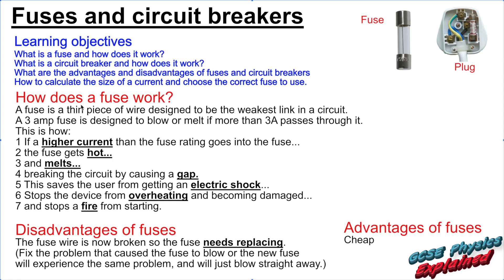A fuse is a thin piece of wire designed to be the weakest link in a circuit. A three amp fuse is designed to blow or melt if more than three amps of current passes through it. You can get all sorts of different sizes of fuses — I'm just using a three amp fuse as an example. This can be worth three or four marks in an exam.